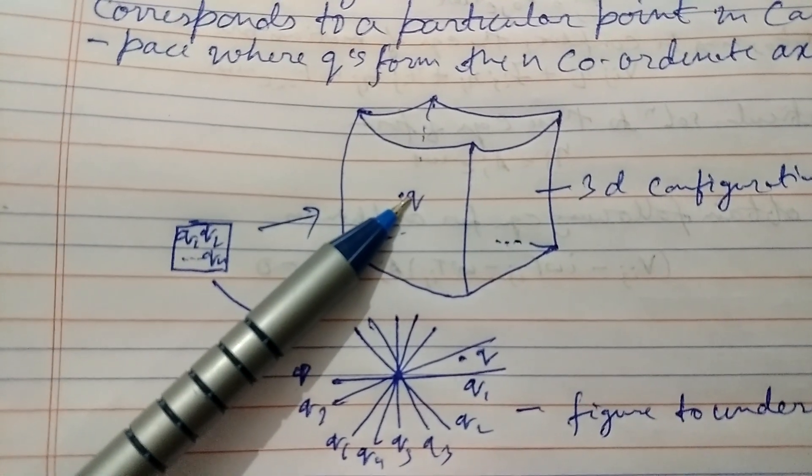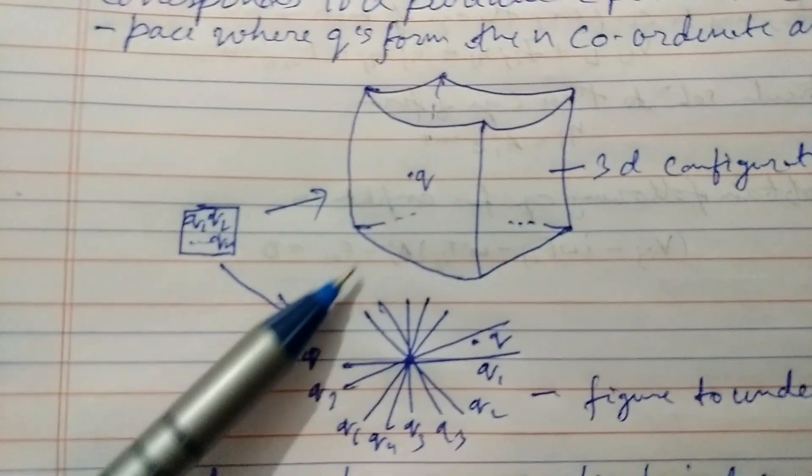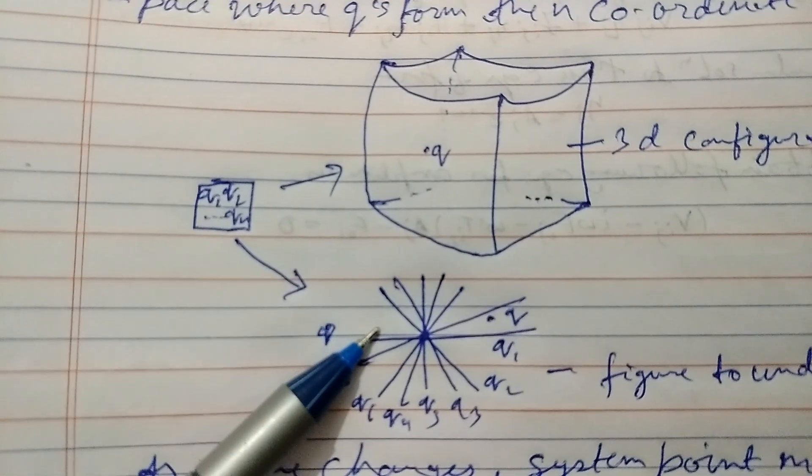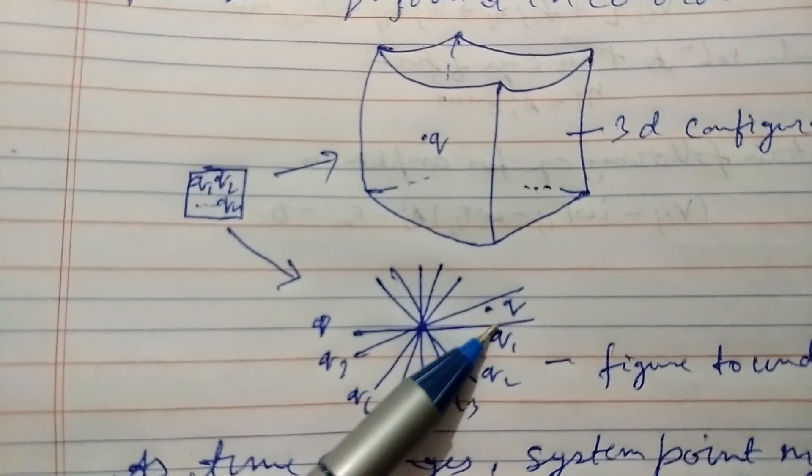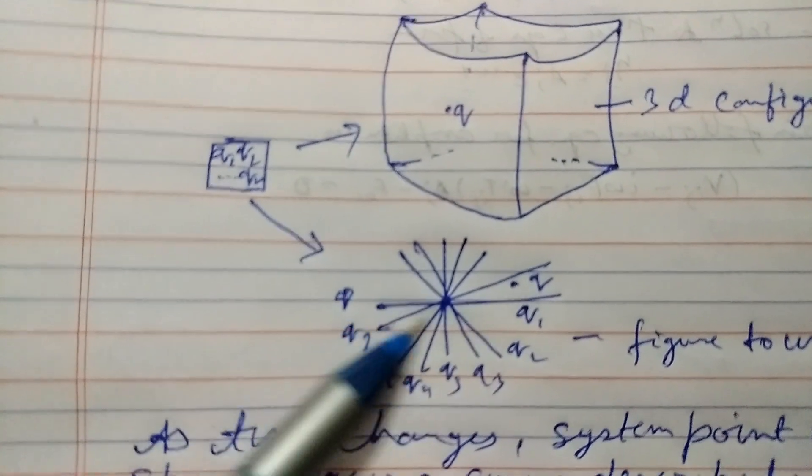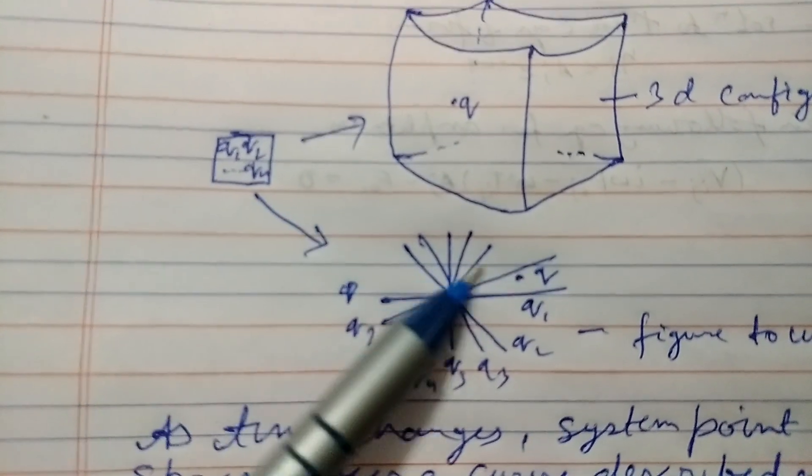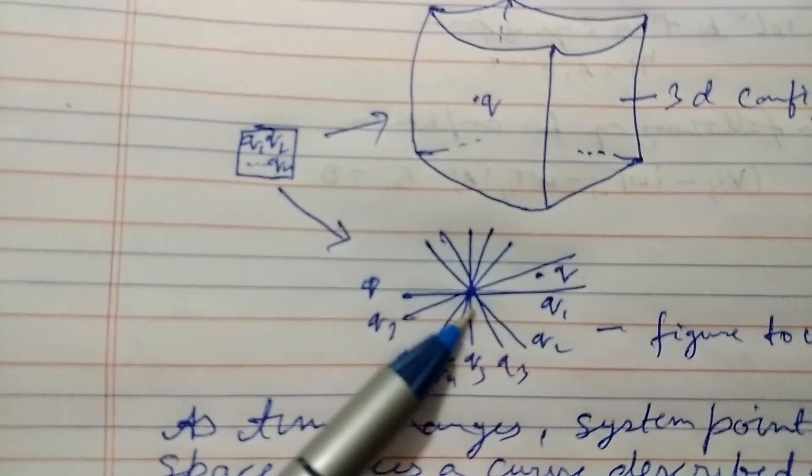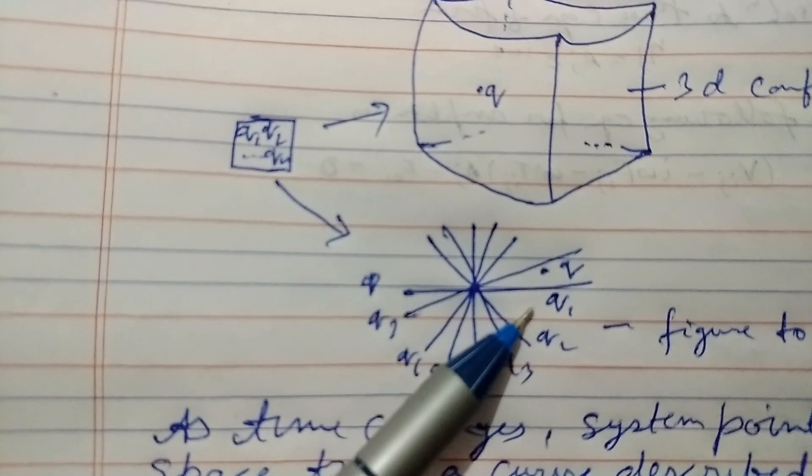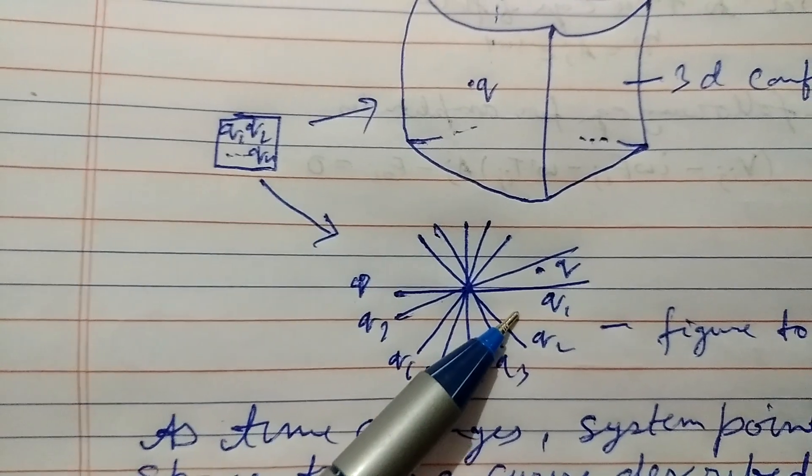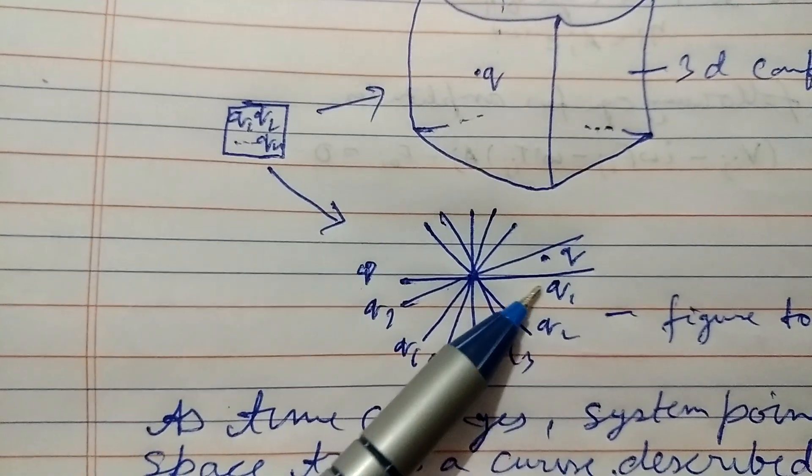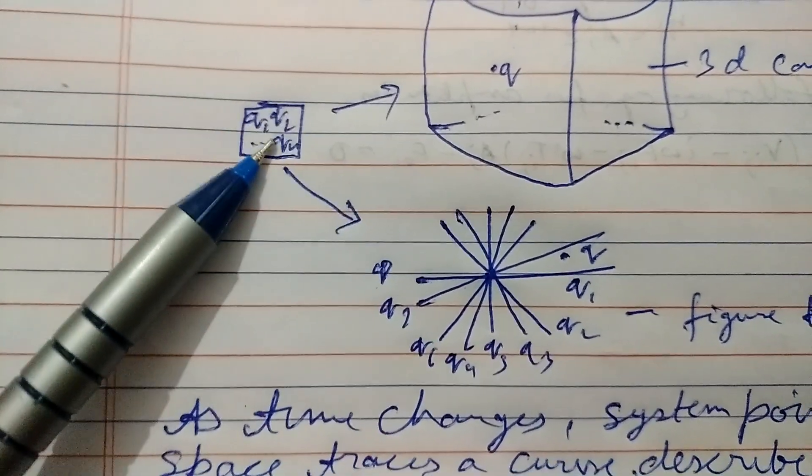This corresponds to a point q in three dimensional hyperspace. We can see it in terms of n dimensional hyperspace by numbering from q1 up to qn and describe this point q1 up to qn by a point q, and this q1 up to qn form n coordinate axis and q is the point corresponding to this set of points.